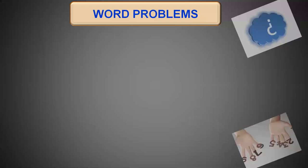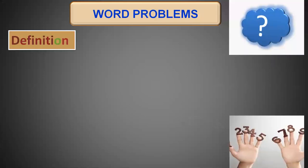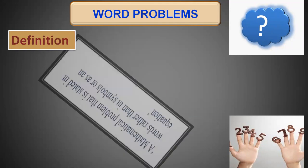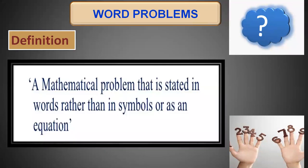What are word problems actually? By definition, a word problem is a mathematical problem that is stated in words rather than in symbols or as an equation. If we have written any problem in the form of words or statements, we call it a word problem. Then we have to derive the equation, analyze the question, and determine what function we have to perform. And then accordingly we solve that word problem.